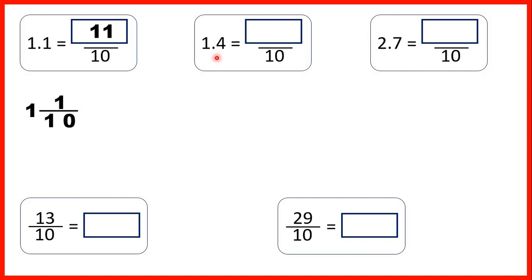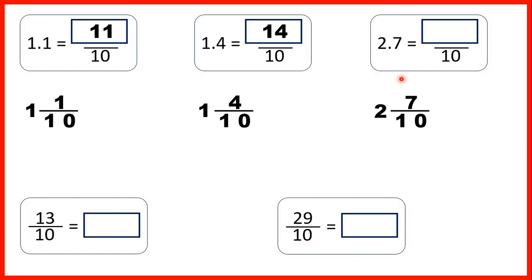1.4 means we have one whole and four tenths. One whole is the same as ten tenths, so ten tenths plus four tenths means that 1.4 is equal to fourteen tenths. 2.7 means we have two wholes and seven tenths, so altogether that's twenty-seven tenths, because each whole can be exchanged for ten tenths — two wholes make twenty tenths, and with another seven, that's twenty-seven tenths altogether.